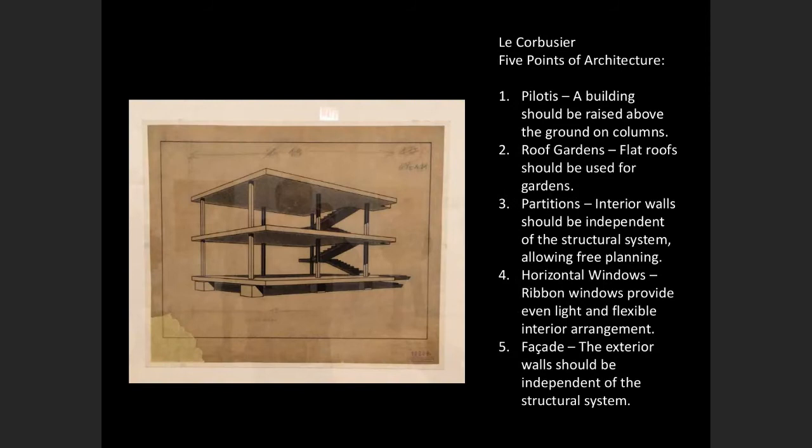Here's an actual rendering that was on display at a Corbusier exhibition at the Tadao Ando Museum on the north side of Chicago. Out of this he develops what he called the five points of architecture. If you're taking notes, this would be key to know and understand, because it becomes a kind of modernist international style aesthetic that spreads beyond just Le Corbusier.